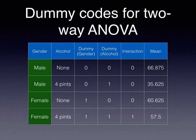For the last group — women who had four pints — the interaction dummy code is one, because you multiply their gender dummy code of one by their alcohol dummy code of one: one times one equals one. So this last group gets a dummy code of one for the interaction, and all three remaining groups in this two-by-two design get zero for the interaction term.